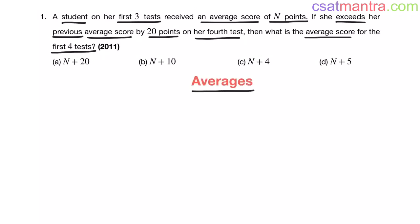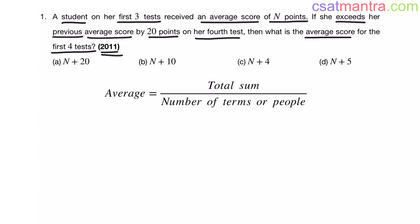This question is from the averages chapter, asked in 2011. We know average equals total sum divided by number of terms or number of people. Here a student on her first three tests received an average score of N points.